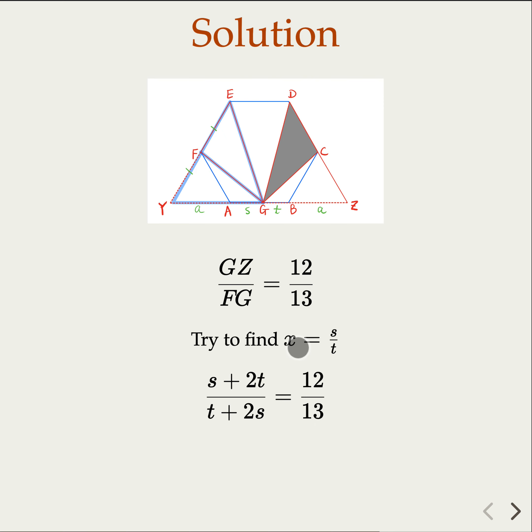But we try to find X. We don't care about S and T. So you divide T on the fraction here. This becomes S over T, which is X, plus 2. Because you divide T. This becomes 1 plus 2 over S over T, which is X.